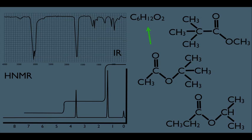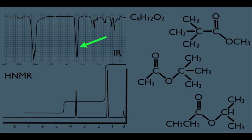Start with the molecular formula — notice it has six carbons and two oxygens, and that's exactly what all these molecules have, so the molecular formula doesn't rule out anything. However, noticing the IR, there's something very distinct — this very strong signal around the 1700 mark is usually a sign of a carbonyl functional group. But notice every single one of our answer choices has a carbonyl group, so the IR is not much help here.